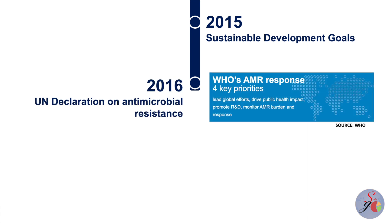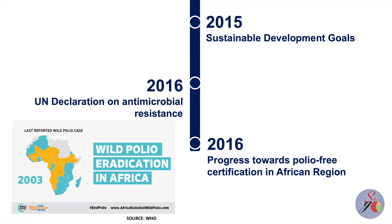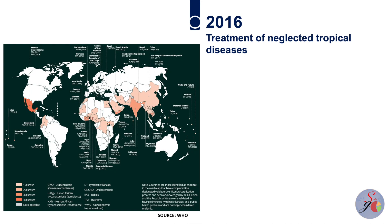In 2016, the UN General Assembly adopted a political declaration on antimicrobial resistance, which led to the establishment of an ad hoc interagency coordination group on antimicrobial resistance, providing practical guidance to ensure global action against antimicrobial resistance. In the same year, Nigeria reported its last wild poliovirus, paving the way for certifying the African region free of such strains. Since then, five of the six WHO regions have been certified free of wild poliovirus and two of the three wild poliovirus strains have been globally eradicated. The goal of treating one billion people for at least one neglected tropical disease in a single year was met for the first time in 2016.